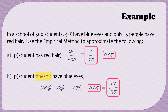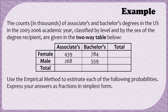Let's do another example of probability. The counts in thousands of associates and bachelor's degrees in the United States in the 2005–2006 academic year, classified by level and by the sex of the degree recipient, are given in a two-way table. This table is called a two-way table because you can read it in two directions. Reading across the rows, we see female and male; reading down, we have associates and bachelors. Sometimes a two-way table includes totals for columns and rows, but in this case they have not been provided.